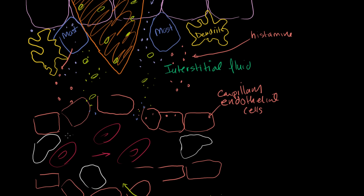And now that the space between these capillary cells have gotten further apart, they can get through. So what they actually do is, let's say that this right here is a neutrophil. They start kind of rolling along the wall right here.